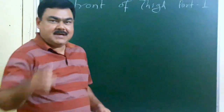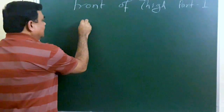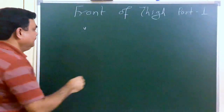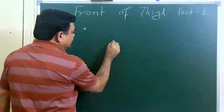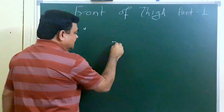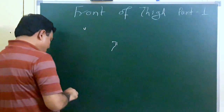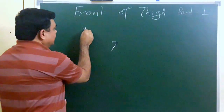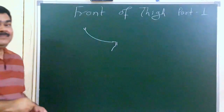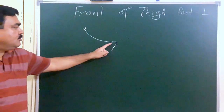We will make a diagram. Here is the anterior superior iliac spine, here is the pubic tubercle, and this is the pubic symphysis. Here is the inguinal ligament, which extends from the anterior superior iliac spine to the pubic tubercle.